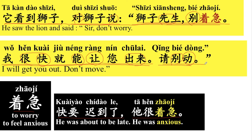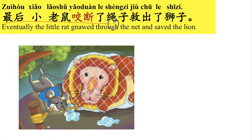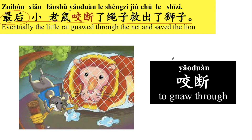最后，小老鼠咬断了绳子，救出了狮子。最后 means eventually. 咬断 means to gnaw through — 咬 means to bite. 绳子 means rope — the rope of the net. 救 means to save. 救出了狮子 means the lion finally got out.